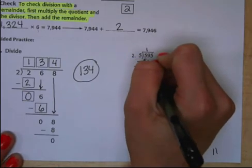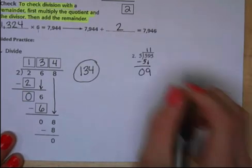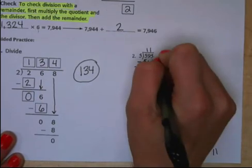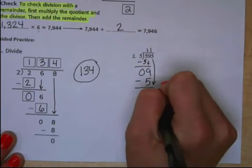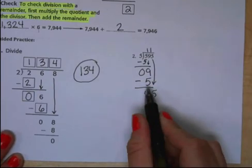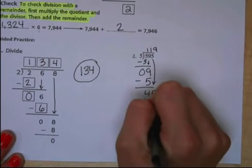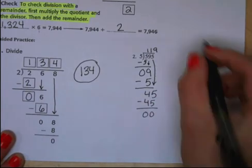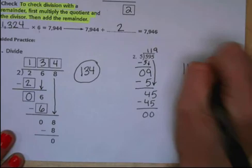5 times 1 is 5. Subtract 5 minus 5, that's 0. Bring down our 9. 9 divided by 5 is also 1. 9 minus 5 gives us 4. Bring down our 5. Divide in the ones. 45 divided by 5 is 9. Subtract 45 and that leaves us with 0 left over. So our final answer for this one would be 119.